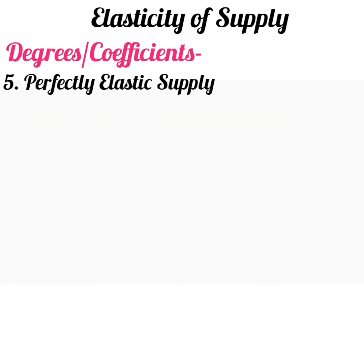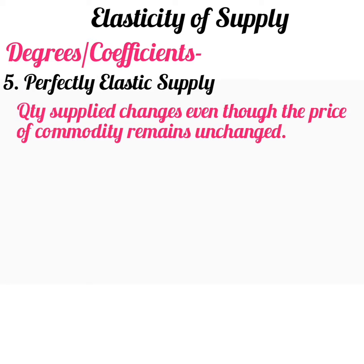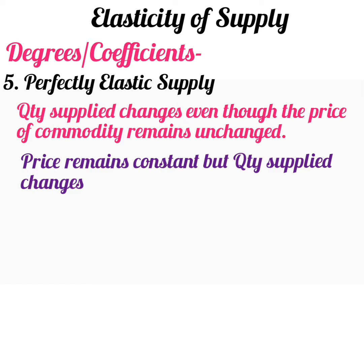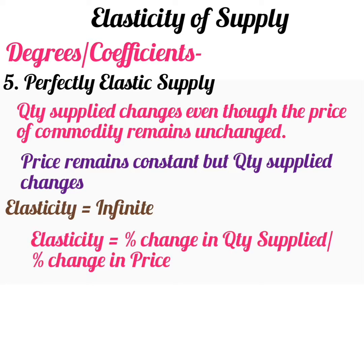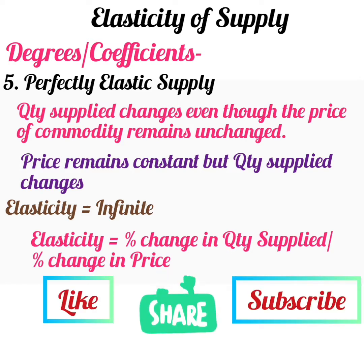Perfectly elastic supply. If the quantity supplied changes even though the price of the commodity remains unchanged, then elasticity of supply is said to be perfectly elastic. It is the situation where price remains constant but quantity supplied changes. Hence, elasticity of supply is equal to infinite, as the denominator will be 0 in the formula. This is an imaginary condition — you won't find such a situation in real life.